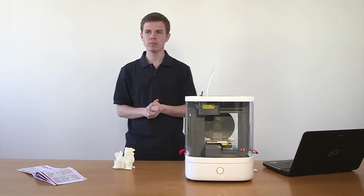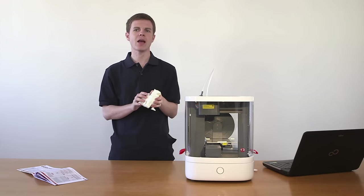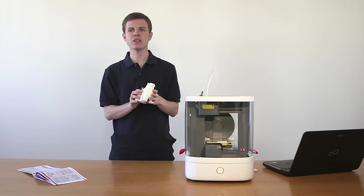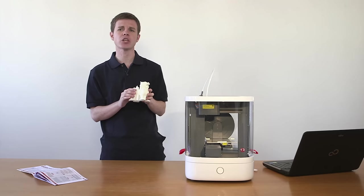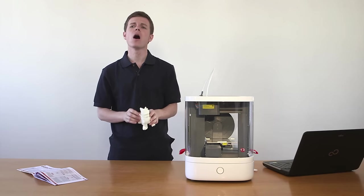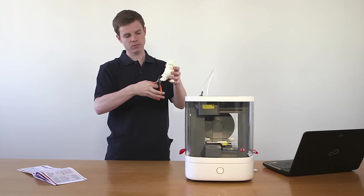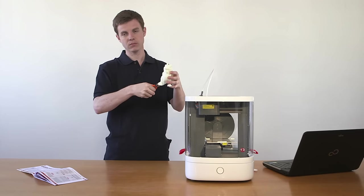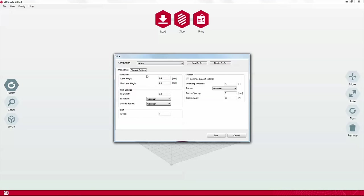Some STL files will print more effectively with the aid of support structures. Vertical props of PLA or ABS that extend between the object and the build plate. Printing the supports is required when shapes have overhanging areas that might otherwise droop or collapse. After printing, you simply snip the supports off with a pair of side cutters. Support structures are added during the slicing process. To add them, select the print settings tab and tick the box labelled generate support material.